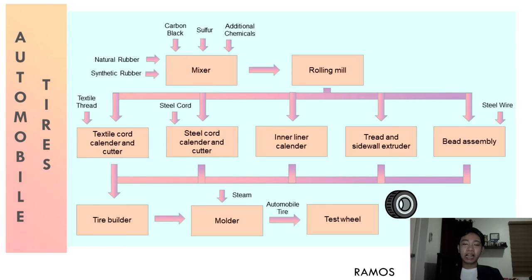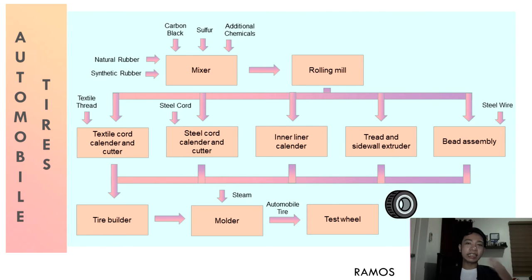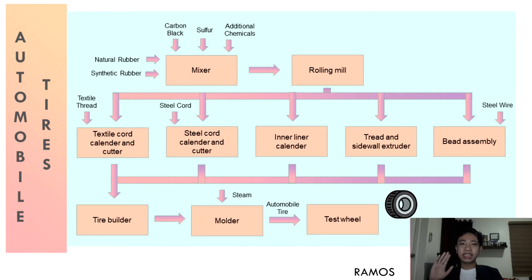The calender machine coats the rubber into the textile thread and steel cord. The extruder forces the rubber through a die to produce a discharge sheet. All the parts are then sent into a tire building machine that assembles the tire.